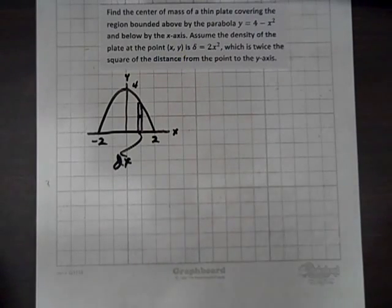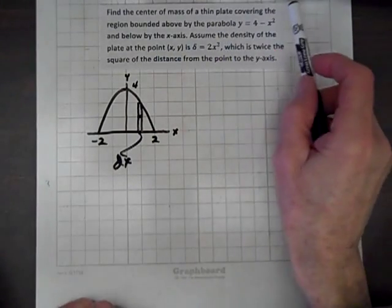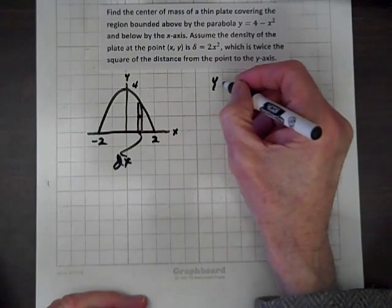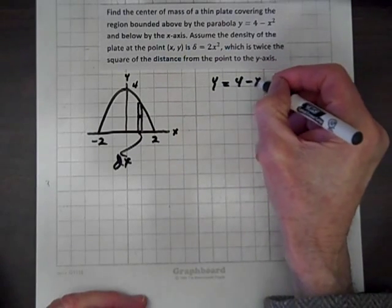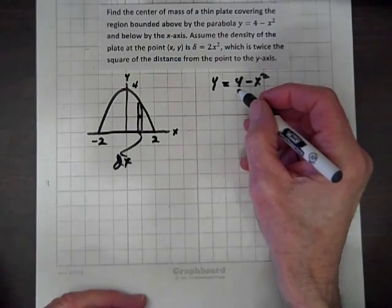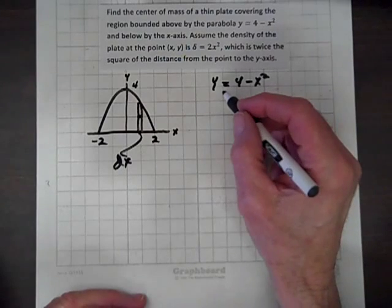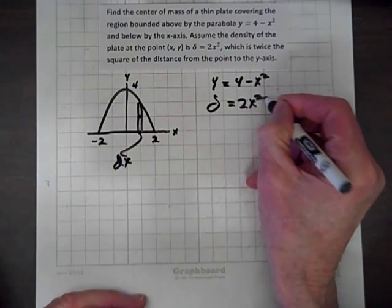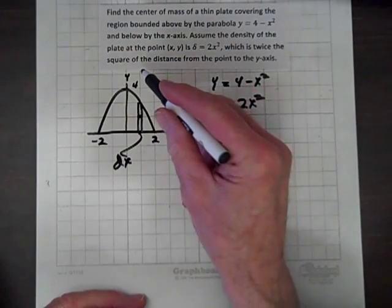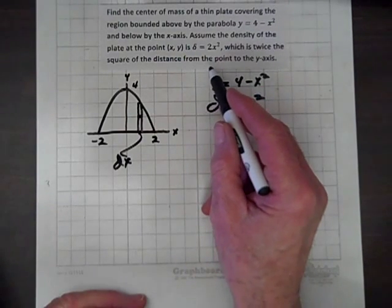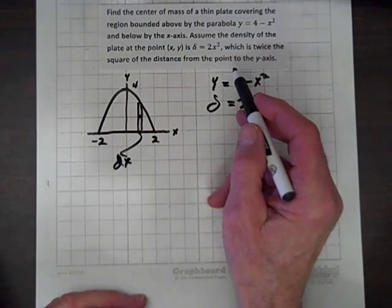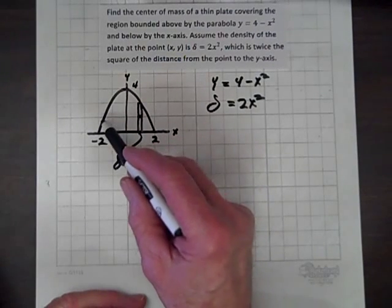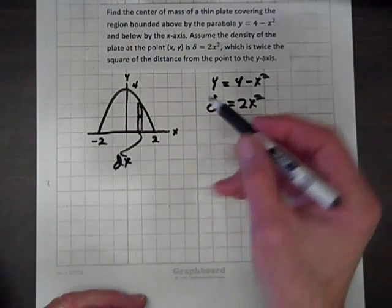Our task is to find the center of mass of a thin plate covering the region bounded above by the parabola y equals 4 minus x squared and below by the x-axis. Assume the density of the plate at the point xy is delta equals 2x squared, which is twice the square of the distance from the point to the y-axis. So the farther the point is from the y-axis in either direction, the larger the density.